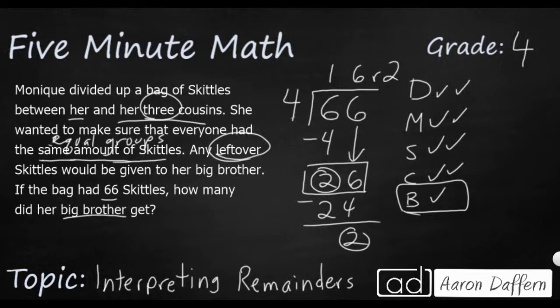So each girl is going to get 16 Skittles. So we can multiply that. 16 times four. Let's make sure we get it correct. Four times six is 24. Four times one is four. Add that two back in is six. So I've got 64. And then you add the two left over, and then you get back up to your 66. So the question is, how much does your big brother get? Her big brother is going to get two.